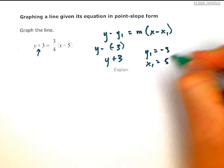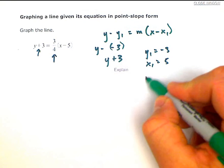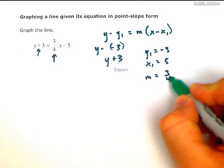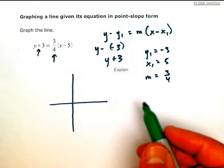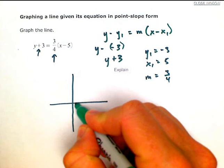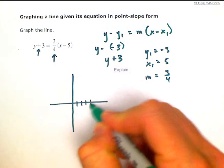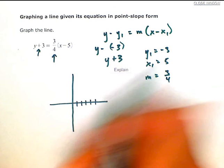And then your slope is going to be 3/4. So if we're going to graph this, it's just going to be 5 in the X direction: 1, 2, 3, 4, and 5, down 3: 1, 2, and 3.